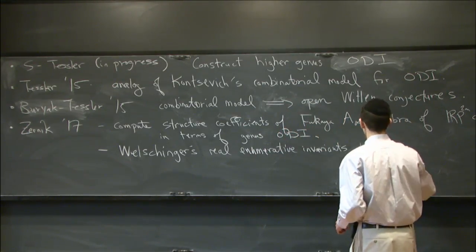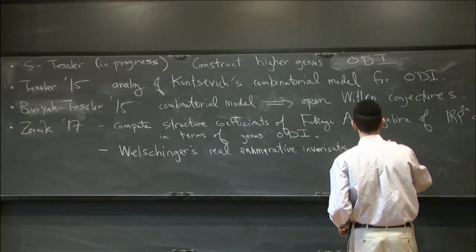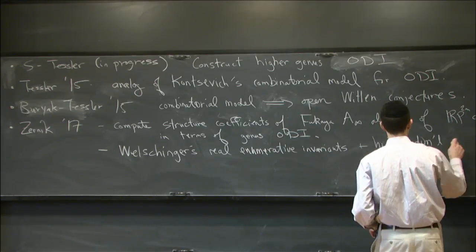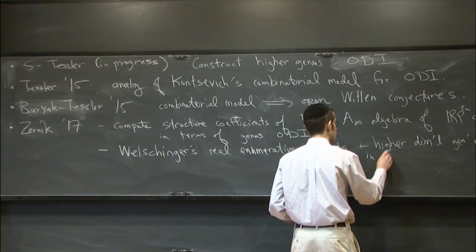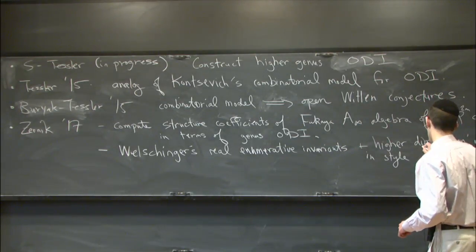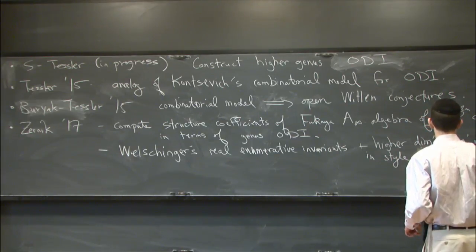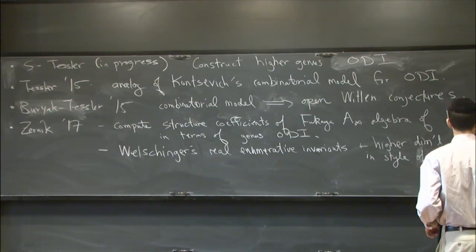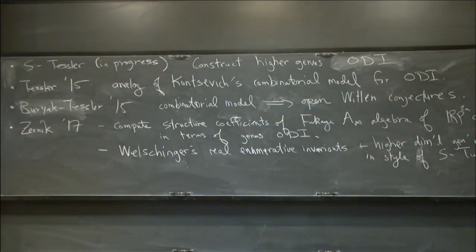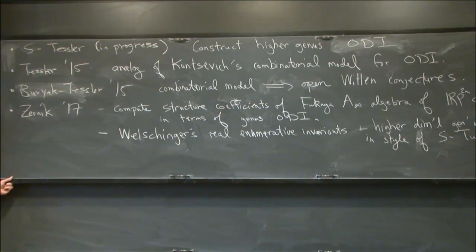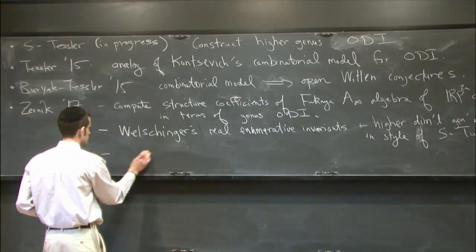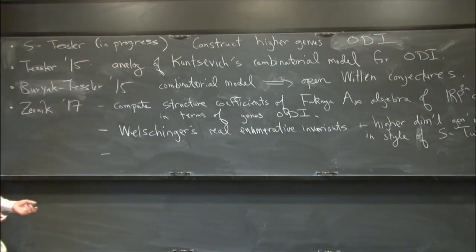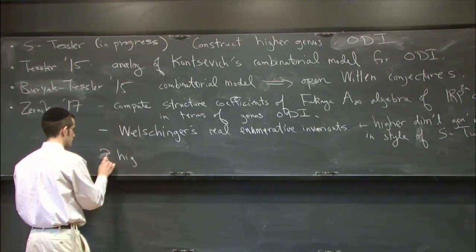And a sort of higher dimensional generalization, in the style of some recent preprints of myself and Tukoczynski. One could then speculate that similar formulas ought to hold — one can write down formulas formally — and you would like to generalize this to higher genus. This is a kind of future direction.